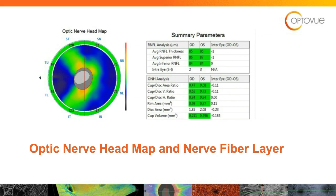There are a lot of metrics when it comes to the nerve fiber layer. We can see average nerve fiber layer thickness, average superior nerve fiber layer thickness, and inferior nerve fiber layer thickness — all very important. The optic nerve head analysis itself is important as well.